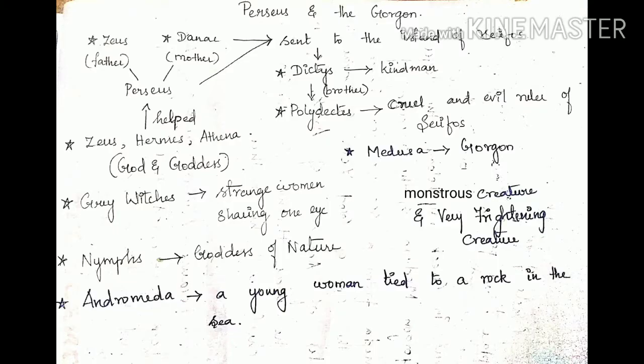I have presented the brainstorming of this lesson — Perseus and the Gorgon — where I'm going to introduce the characters before entering into the lesson. The first character is Zeus, the king of gods, and Danae, a beautiful human who was also the daughter of King Acrisius. Perseus was the son of God Zeus and beautiful human Danae. When Perseus was born, Danae and Perseus were sent to the island of Seraphos, where a kind man called Dictus saved them. Dictus was the brother of Polydictus, the cruel and evil ruler of Seraphos.